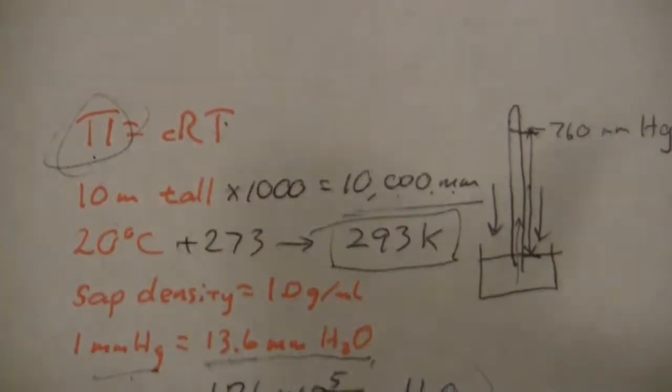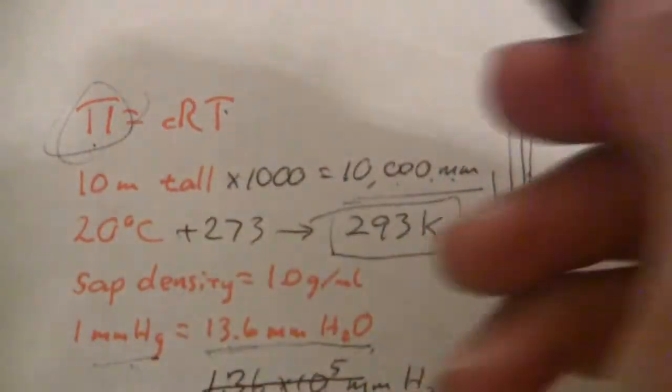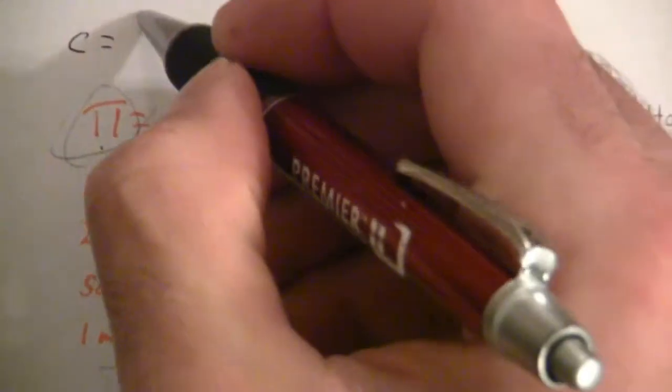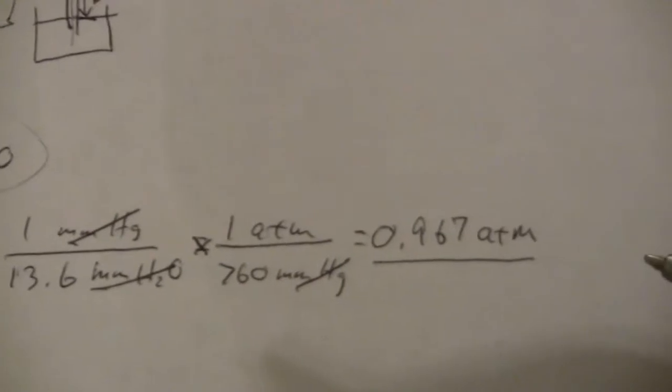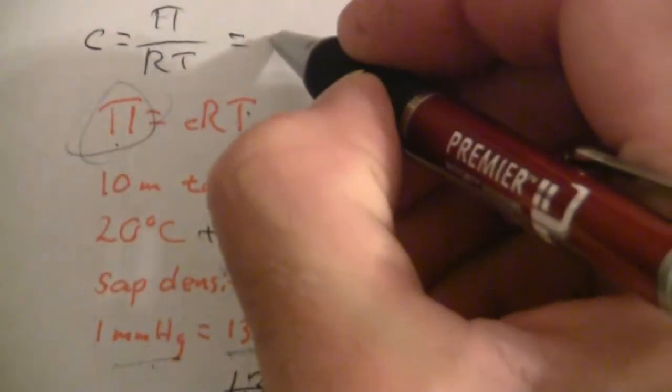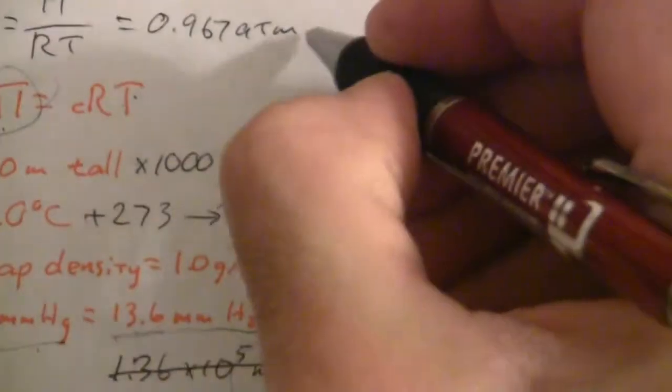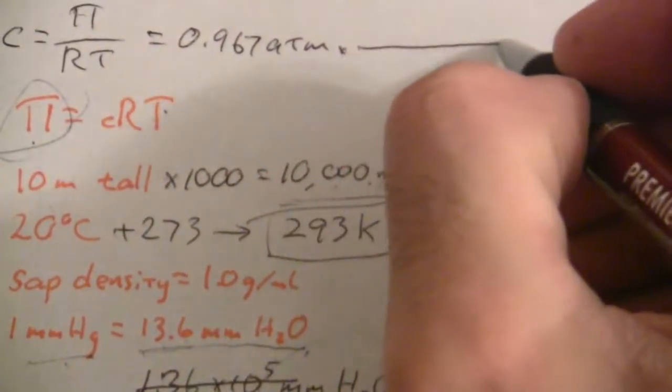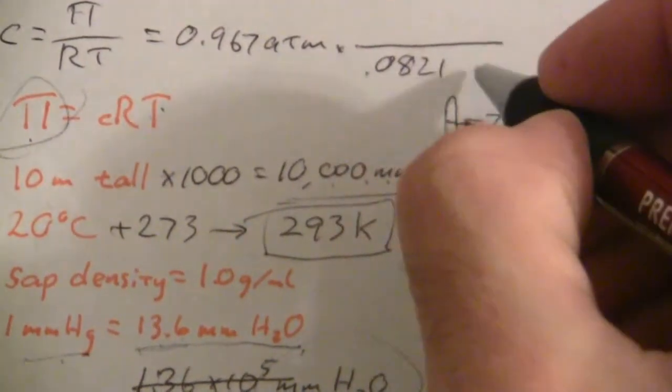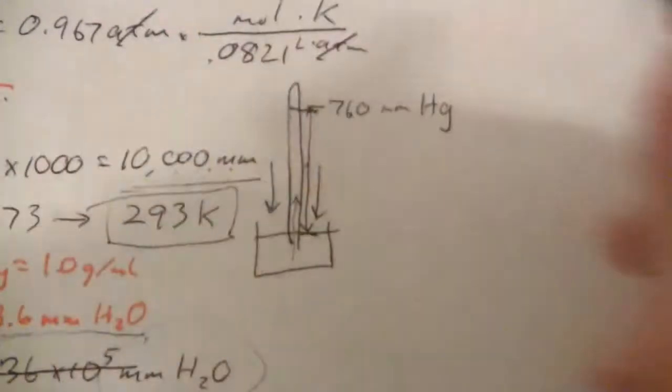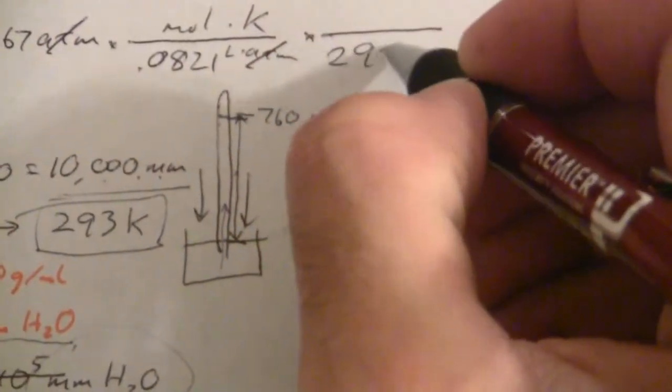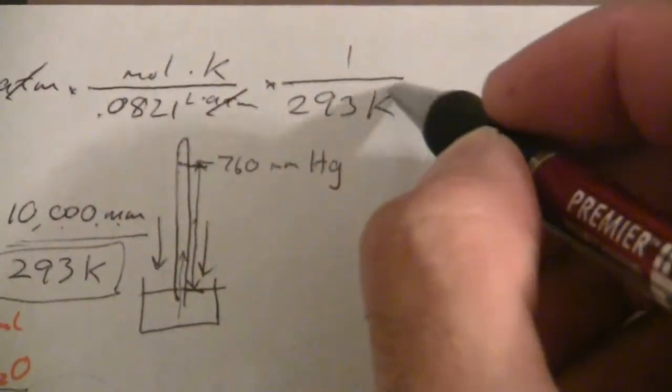Now we've got that part. We have our temperature, we add 273 to get it to Kelvin and that becomes 293 Kelvin. And we just plug in these values. I'm going to go ahead and solve this for C and we'll have C = π / RT. And my π I said was 0.967 atmospheres, and I'm dividing that by R which is 0.0821 liter atmospheres per mole Kelvin. Notice my atmospheres cancel and I'm dividing again by the temperature which is 293 Kelvin. My Kelvins cancel and what I'm left with is moles per liter.